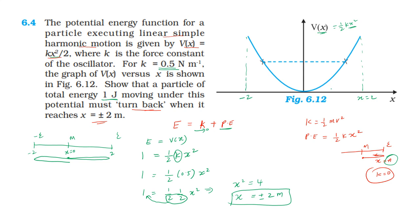The parabola graph is between x equal to plus 2 meter and minus 2 meter. At the boundary, the particle is isolated and must turn back. Next question.